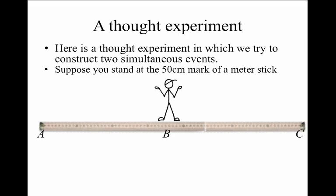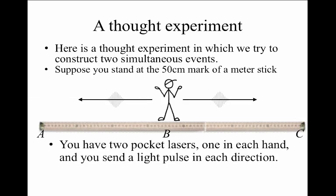So let's suppose I stand at the 50 centimeter mark of a meter stick. I'm right at the middle. I'm going to designate the left end of the meter stick as A, the middle is B, and the right end of the meter stick is C. At a certain point, I'm going to take out two pocket lasers, one in each hand, and I'm going to send a pulse of light, one off to the left and one off to the right towards the ends of the meter stick A and C.